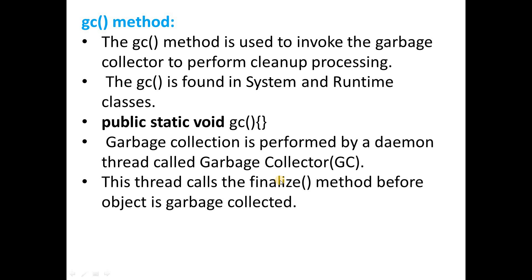What actually happens when the garbage collector process starts: you call the gc() method, which activates the daemon thread. Then the finalize method is called, and the garbage collector collects the unreferenced objects. You can also call the finalize method directly and the garbage collector will complete its task.